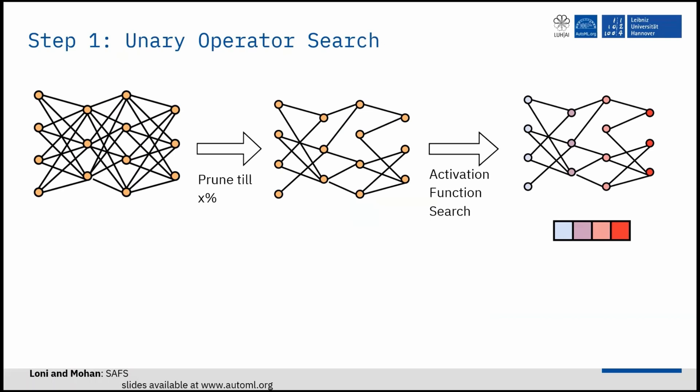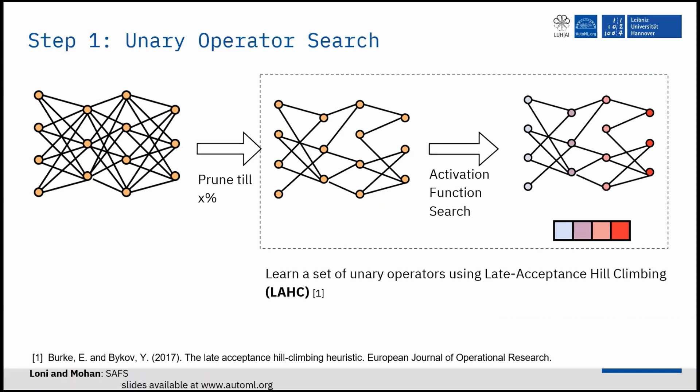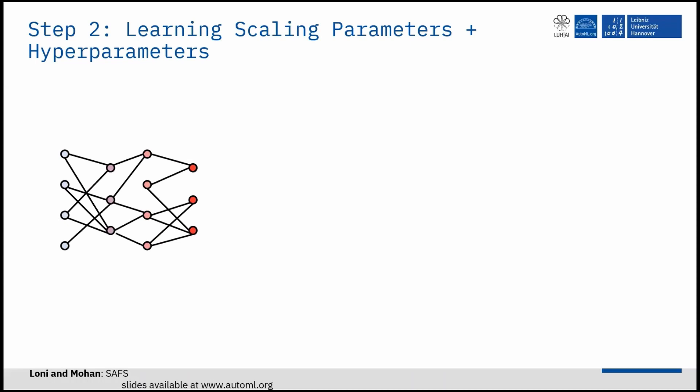Late acceptance hill climbing works on discrete spaces and is able to quickly search the space to find unary operators. In this stage, we keep alpha and beta learnable factors equal to one.